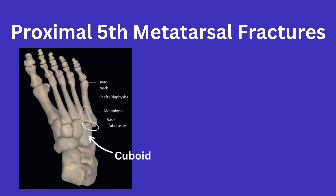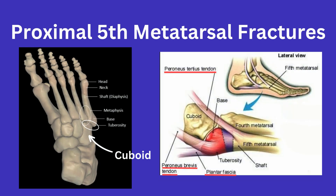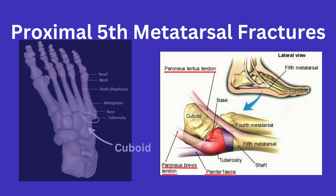The 5th metatarsal articulates with the 4th metatarsal and cuboid proximally, as you can see here. The base of the 5th metatarsal has attachments of the peroneus brevis and part of the plantar fascia. The peroneus tertius attaches along the superior portion proximally as well.